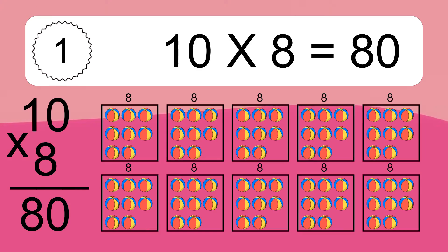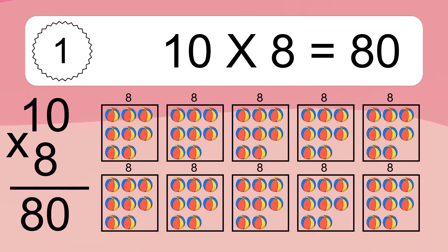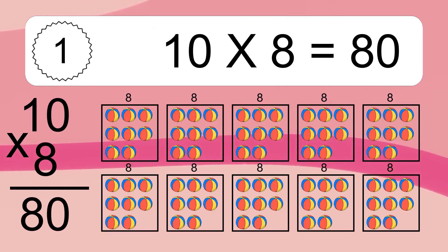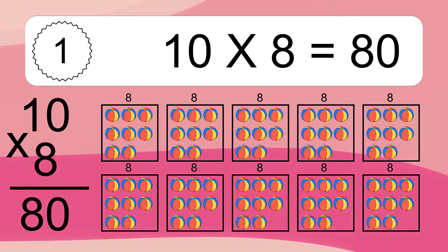We have 10 boxes, and each box has 8 colorful balls inside. If you count all the balls in all the boxes together, you will have 10 times 8 balls. This equals 80 balls.